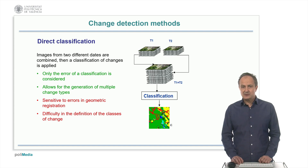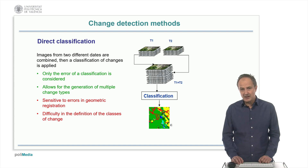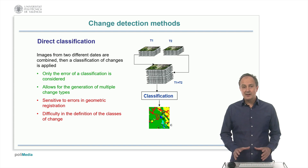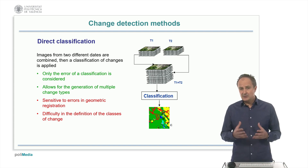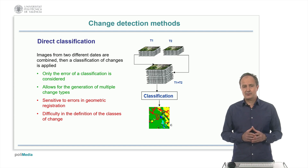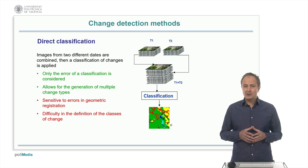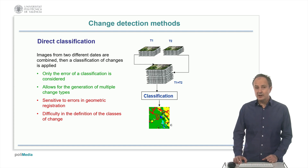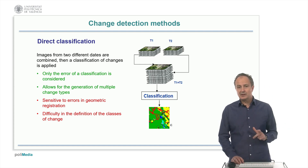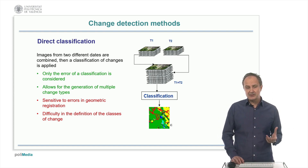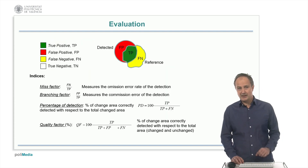Another change detection method is based on the direct classification of two images with several bands acquired at different dates. They are combined in one file and then classified, including classes of change. This method has the advantage of considering multiple types of changes, but the difficulty of the proper selection of classes of change. However, the results are usually better than using the method of image differencing, even if it is more difficult to apply.